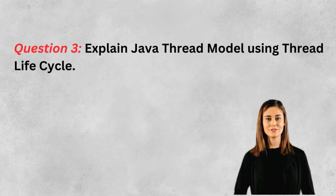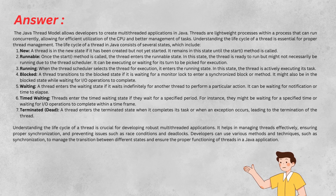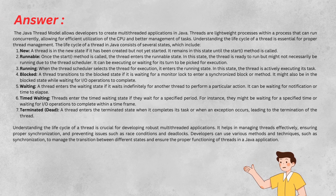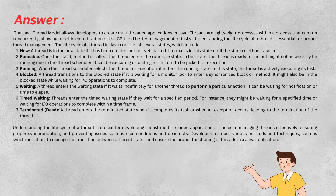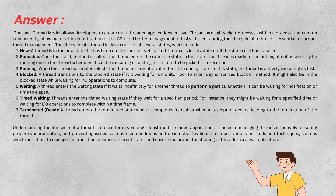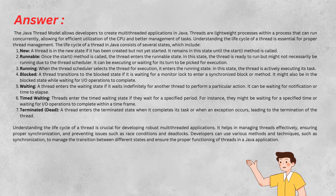Question 3: Explain the Java thread model using the thread life cycle. The Java thread model enables the creation of multi-threaded applications, with threads going through several life cycle states: New — created but not yet started; Runnable — ready to run after start is called, but might not be running immediately due to scheduling; Running — actively executing its task; Blocked — waiting for a monitor lock or I/O completion.